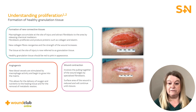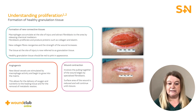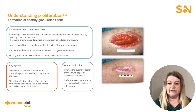As part of the proliferative phase, new blood vessels are stimulated by macrophage activity and begin to grow into the matrix — a process known as angiogenesis. This means that extra oxygen and nutrients are delivered to the healing tissue and metabolic waste can be removed. Specialised fibroblasts also pull together the wound edges, reducing the surface area of the wound until wound closure.